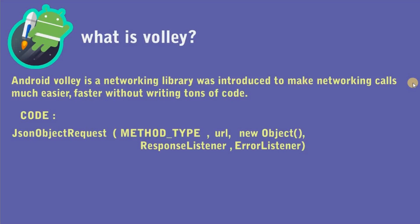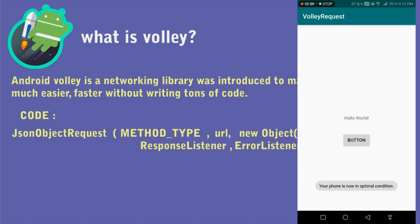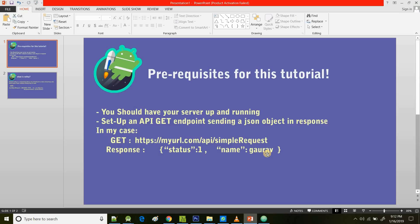Hey guys, this is Gaurav, you're watching Computer Freaks. Today we're going to talk about Volley. In this video we're going to make an Android application which will have 'Hello World' by default, and when you hit the button we're going to do a simple GET request, get data in response from our server, receive a JSON object, and use the name attribute to replace the Hello World text.